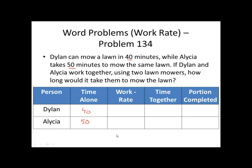The work rate is the reciprocal of the time alone, so 1 over the time. For Dylan, that's going to be 1 over 40. That means he can do 1 40th of the lawn in one minute. For Alicia, that's going to be 1 over 50.